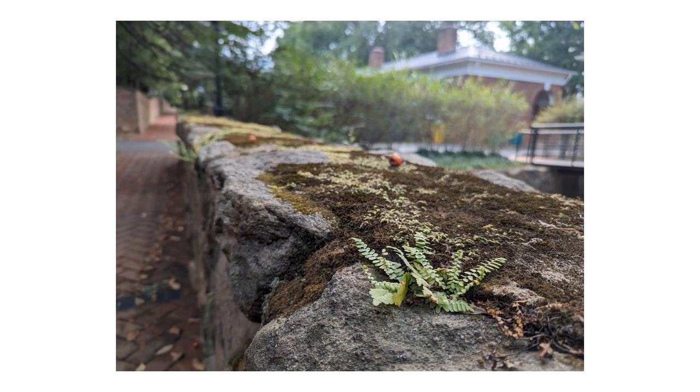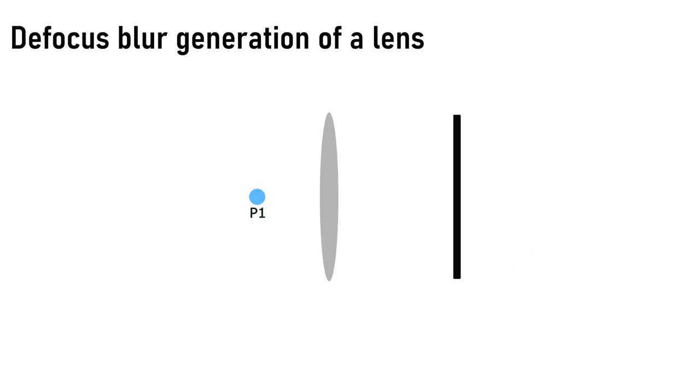This blurriness is related to the distance of an object from the camera, and we utilize this relationship to estimate depth of various objects in front of the camera. We call this effect defocus blur.